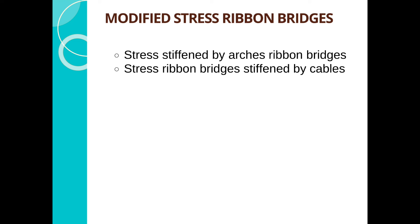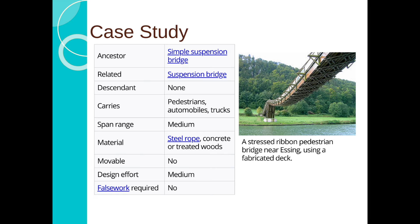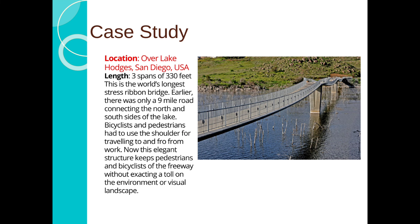Modified Stress-Ribbon Bridges are defined by arches, while stress ribbon bridges supported by cables represent another modification. Case study: a stress ribbon pedestrian bridge near Ashing using a fabricated deck. A case study in the USA features 3 spans of 330 feet — this is the world's longest stress ribbon bridge. Earlier, only a narrow road connected the north and south sides of the lake, and cyclists and pedestrians had to use the shoulders for travel. Now, this elegant structure keeps pedestrians and cyclists off the freeway without impacting the environment or visual landscape.